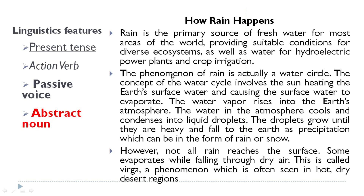After introducing rain, the writer explains the process and phenomena of rain. The second paragraph explains: 'The phenomenon of rain is actually a water cycle. The concept of the water cycle involves the sun heating the earth's surface water and causing it to evaporate. The water vapor rises into the earth's atmosphere. The water in the atmosphere cools and condenses into liquid droplets. The droplets grow until they are heavy and fall to earth as precipitation, which can be in the form of rain or snow.'